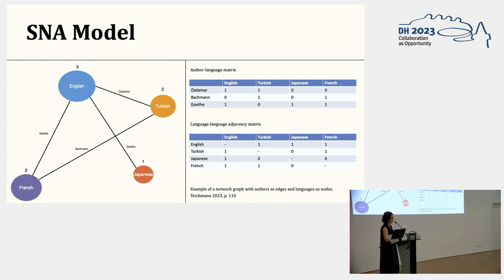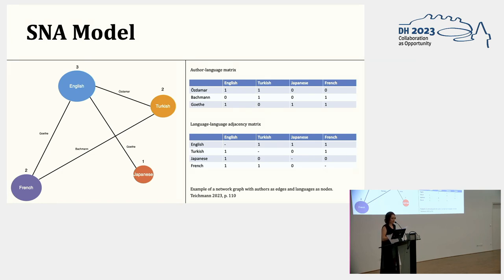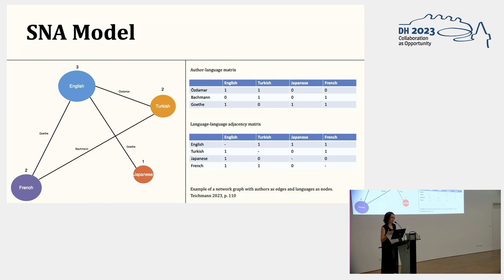I used data extracted from the German National Library Catalog to construct an author-language matrix where rows represent authors and columns represent languages, with values representing the number of translations in those languages. From there, I constructed a language-language matrix looking at how many authors link languages, which you can also see represented in the values in the lower table here. As an example, English appears connected with Turkish by both having translated titles of Emine Sevgi Özdarmar, for instance.